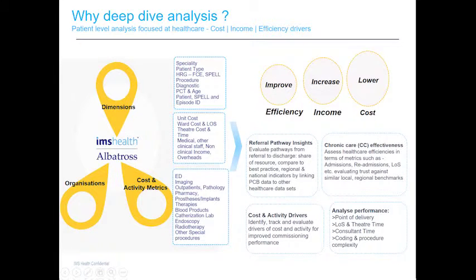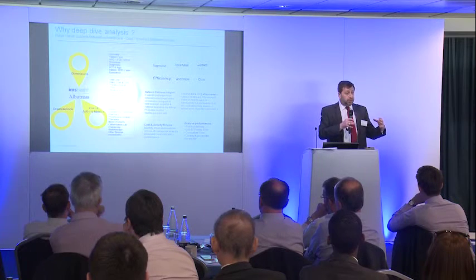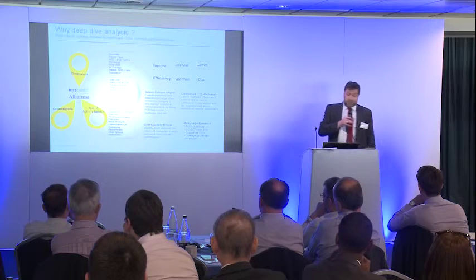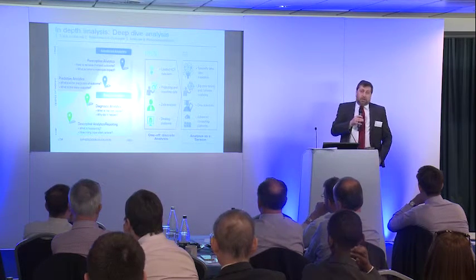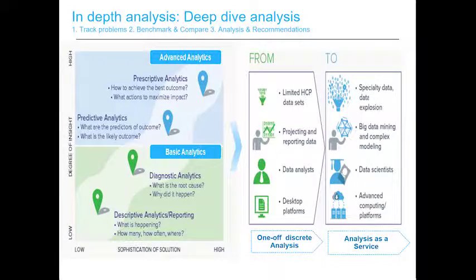What we're looking at are dimensions in terms of main activity information — cost and activity measures — bringing all of this information together into a single pot, with benchmarking forming part of that information set. Lots of complicated terms: big data analysis, data sciences, advanced computing platforms. The basic principle is that we're using advanced technology that individual NHS trusts would simply not be able to implement or afford — the type of technology used by data scientists — to see if we can apply these methods and produce tangible results.